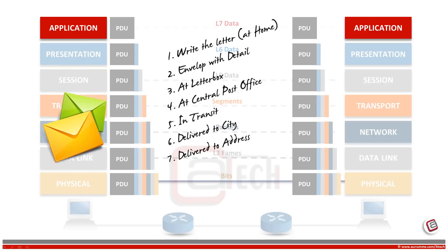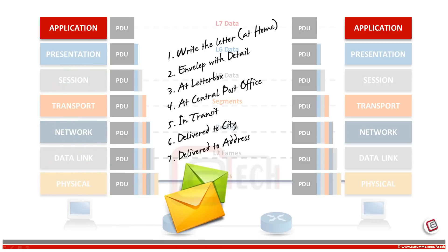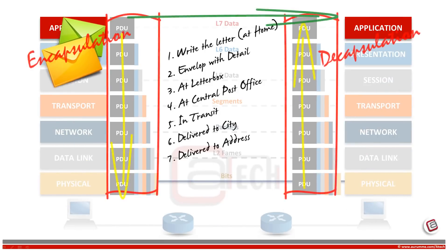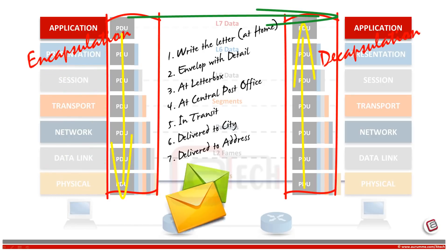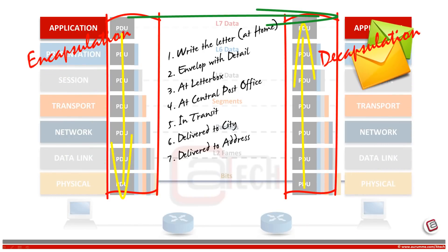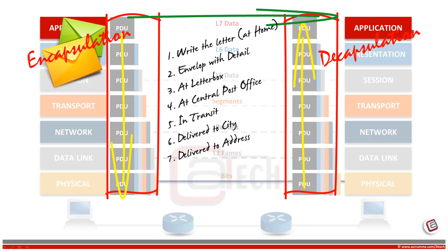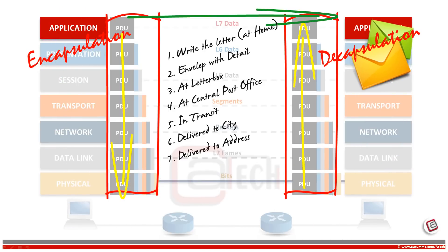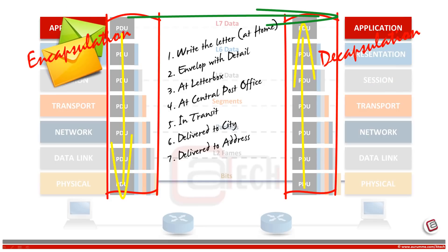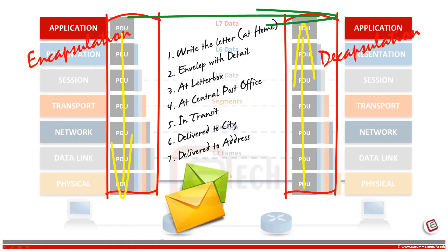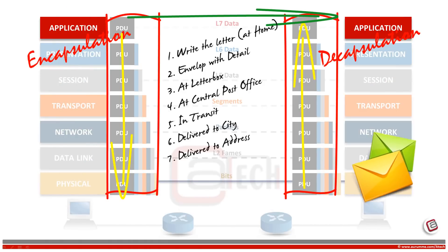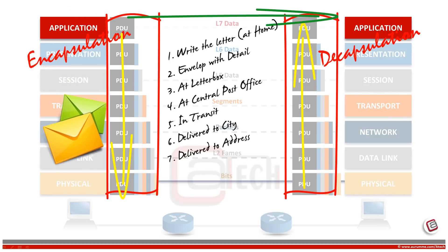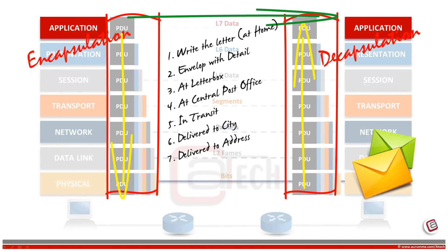Although we are interested only in the last step — that our friend should read the letter — we are bound to follow the whole process and can't skip any step. If we put our letter directly into the mailbox without an envelope, it will never be delivered unless there is some miracle. But it never happens in the real network world, so we have to follow the proper process.